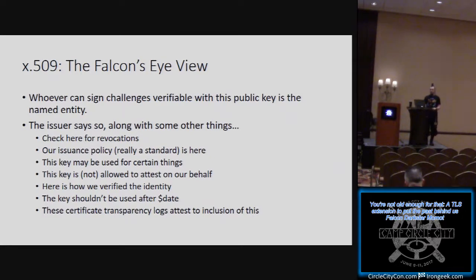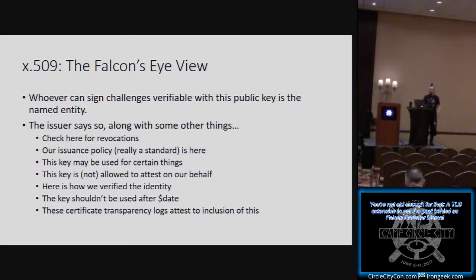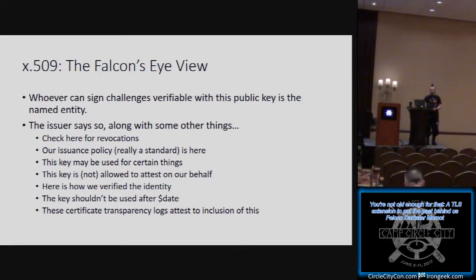The assertion is made with the strength of the issuer — your certificate authority. The issuer adds many things to the document: here is where I distribute my CRLs, check here for revocations, check there for OCSP responses. This key may be used for certain things — you can use it to encrypt website connections but not to sign code and emails. It says whether or not the key is a sub-CA allowed to make attestations on the CA's behalf — unsurprisingly, this field is almost always no. It also encodes information about how the CA verified identity, an expiry date, and certificate transparency log pointers.